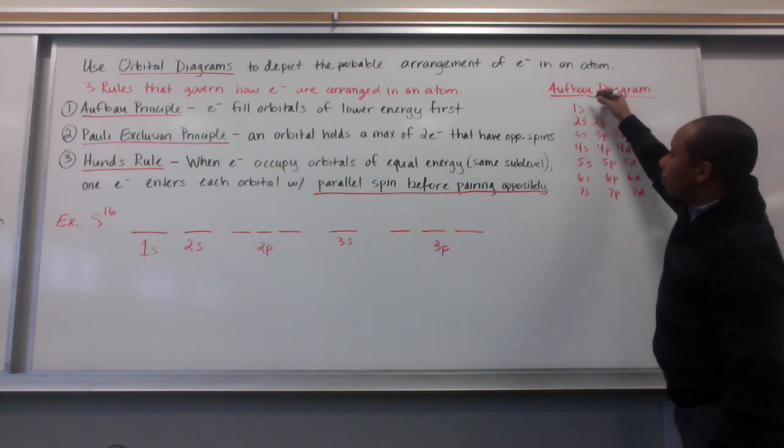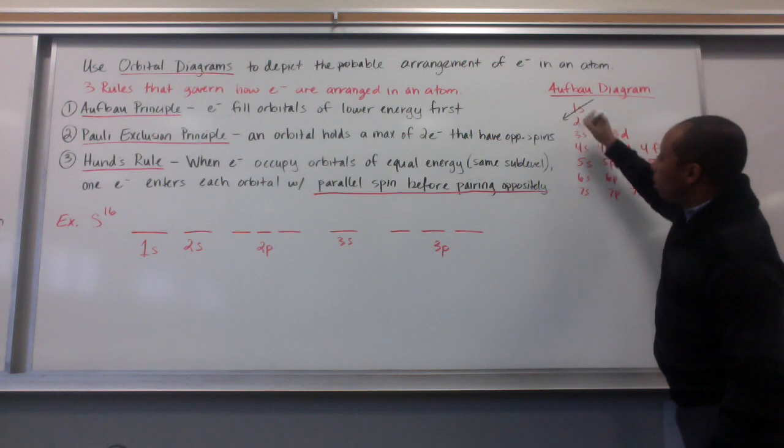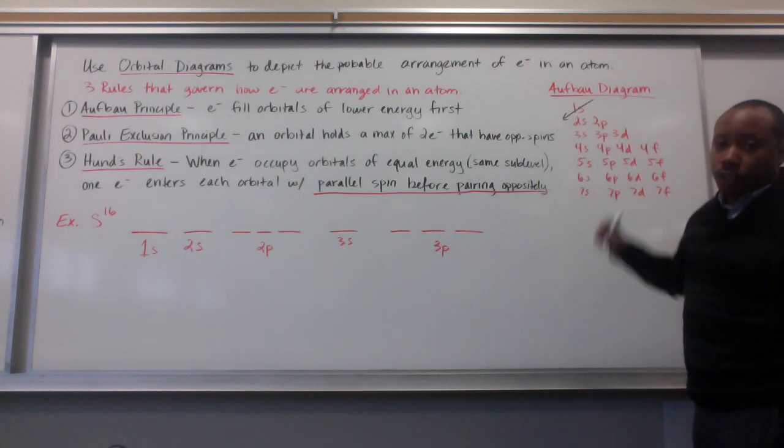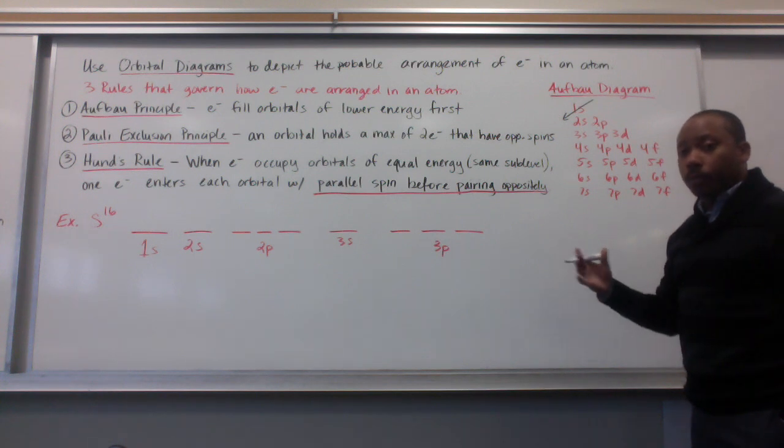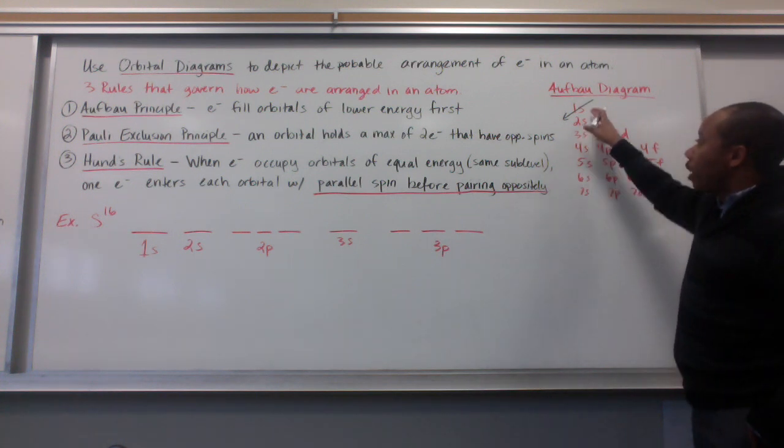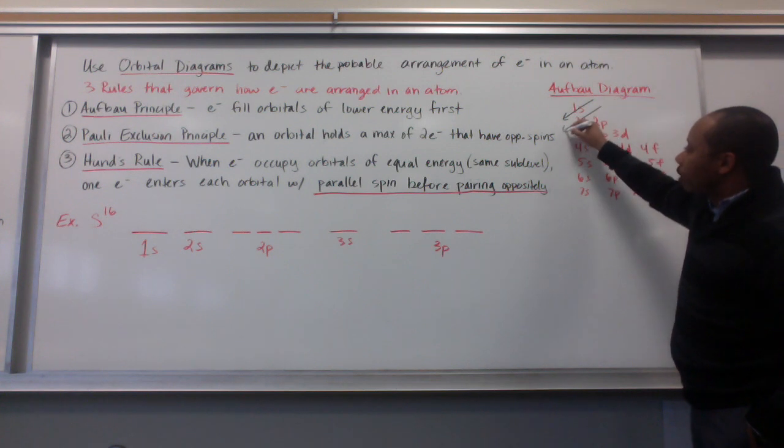So, first, the 1s orbital is filled. I'm going to show the direction in order in which electrons are filled by these arrows. So, 1s is filled first, then 2s, then 2p.